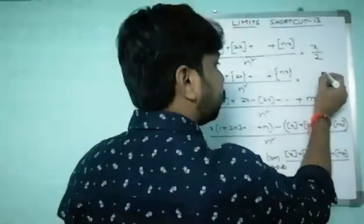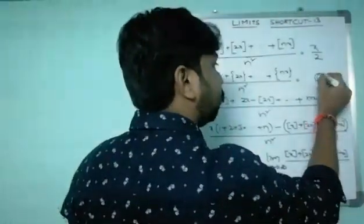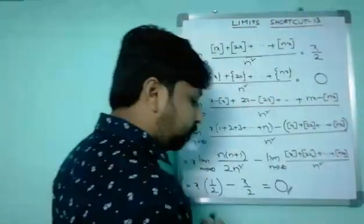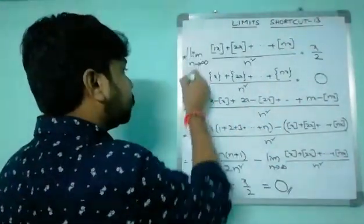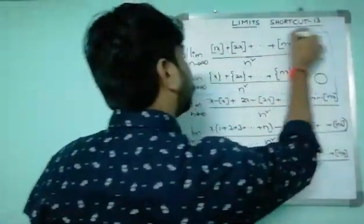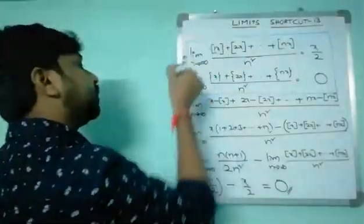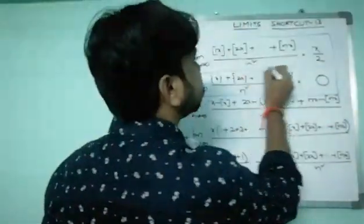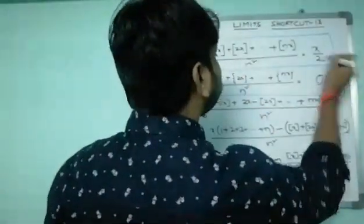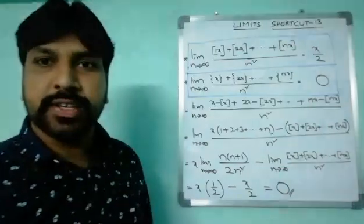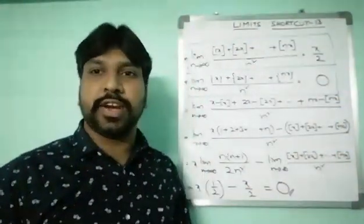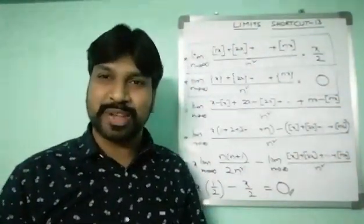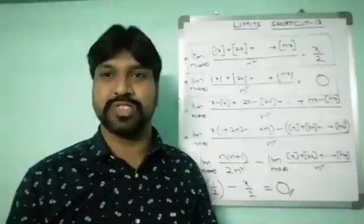This result of 0 is the most important outcome here. In competitive examinations, they give exactly this kind of question. That's what I discussed today — the shortcut involving bracket X and fractional part of X. That's all for today. Please look at this carefully. Thank you very much.